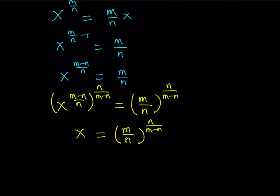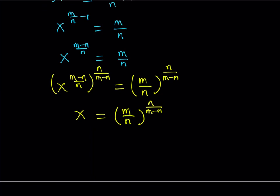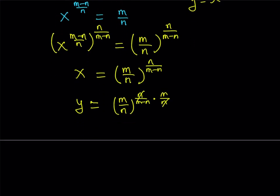That's the x value, but I also want the y value. We know y and x are related by this expression. I can write y as x to the power m over n. Since I already have x, I write y as m over n to the power n over m minus n, raised to the power m over n. When raised to the power m over n, the exponents multiply, cancelling out the n. That equals m over n to the power m over m minus n.